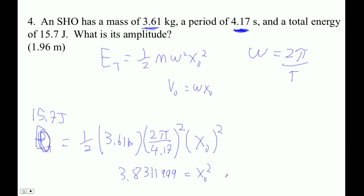Equals x-naught squared, and so I'm going to square root both sides. Raise that to the 0.5. I get that x-naught is 1.957 meters, which I guess we only have 3 sig figs.